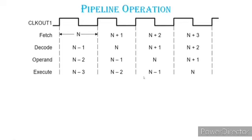When we start the nth instruction, it goes through fetching, then decoding, then execution. With a pipeline, each instruction goes through these stages so that operations are done in parallel. All of these instructions are done in 4 stages.